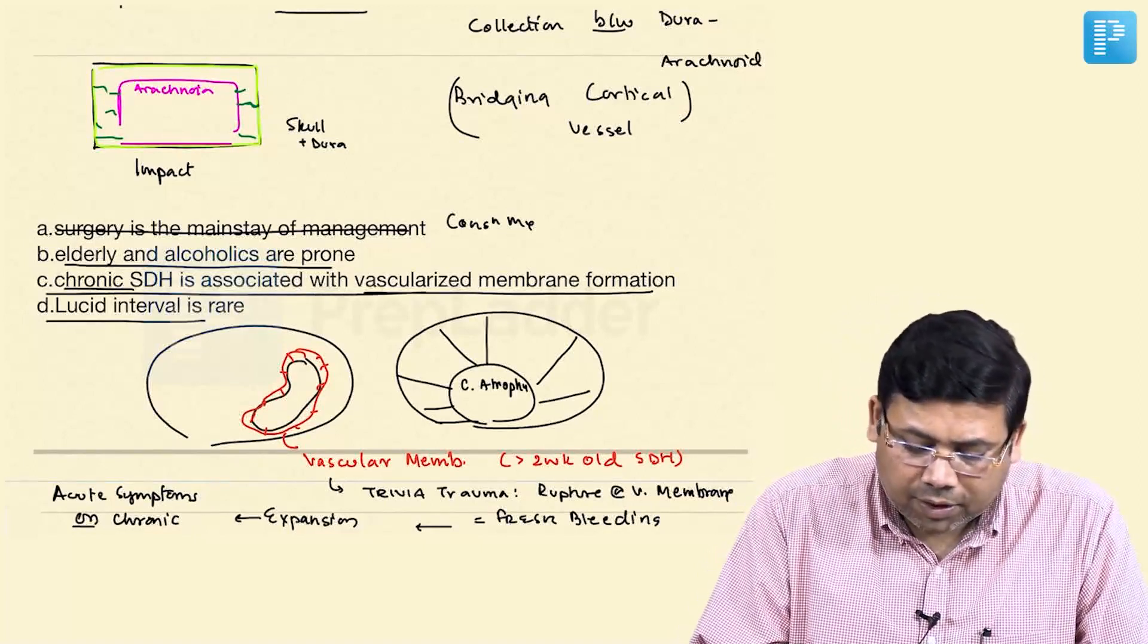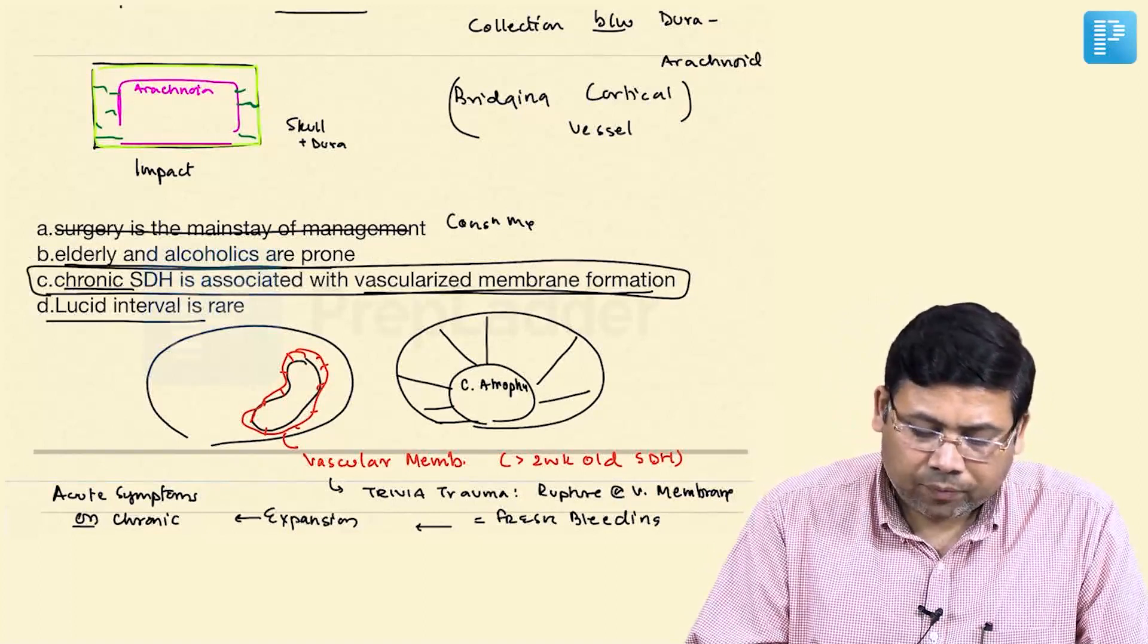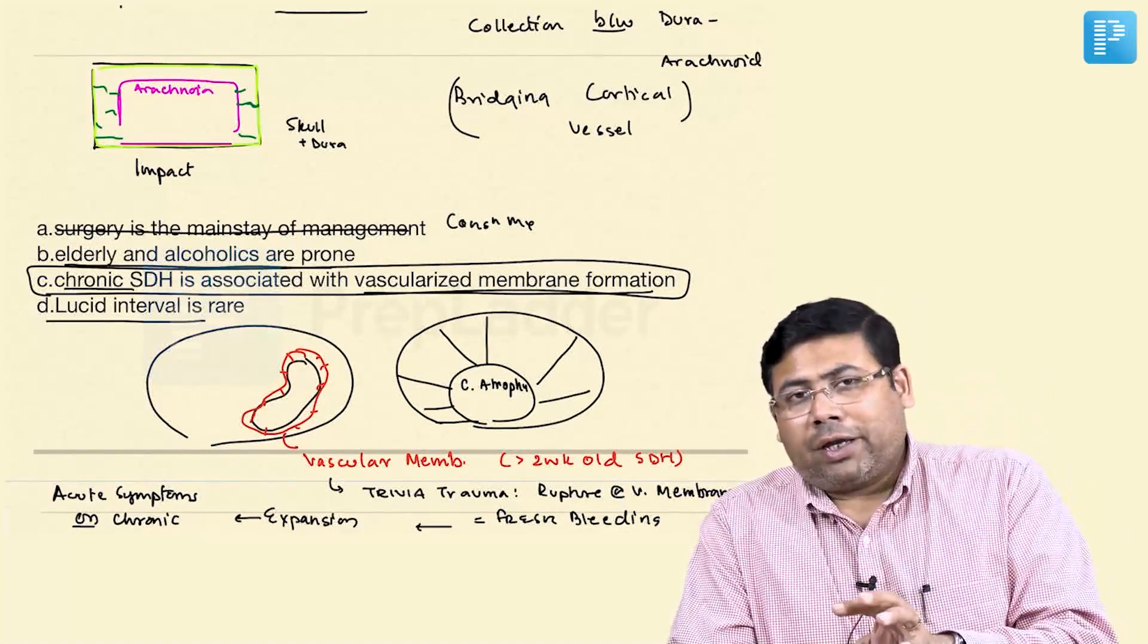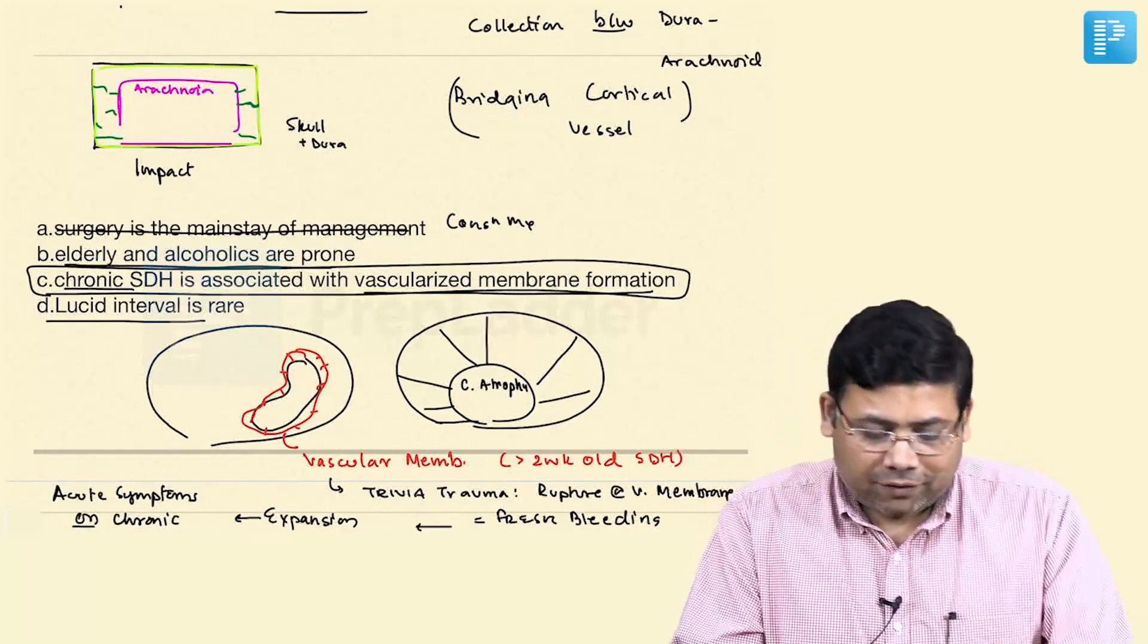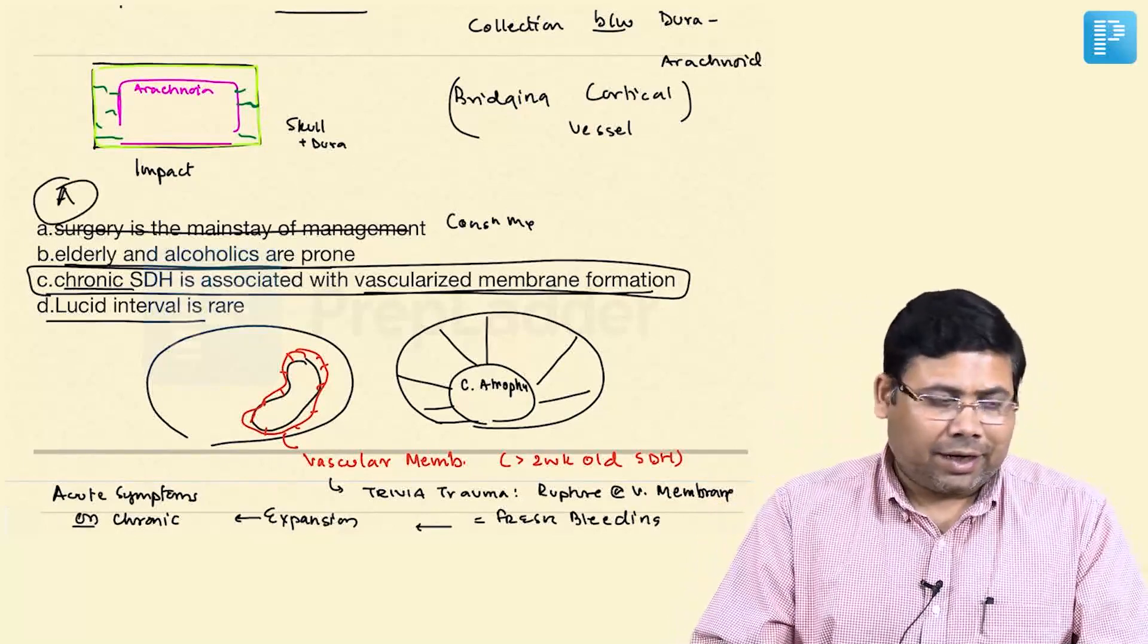Chronic SDH is associated with a long-standing SDH. Acute on chronic SDH is associated with rupture of bridging cortical vessels. So, A is wrong in this case.